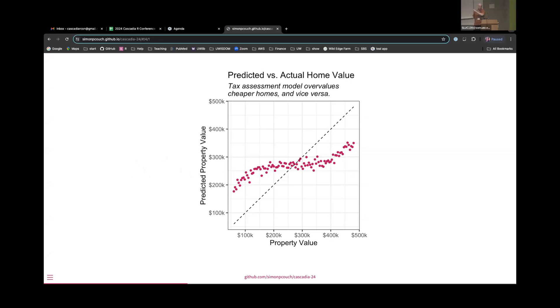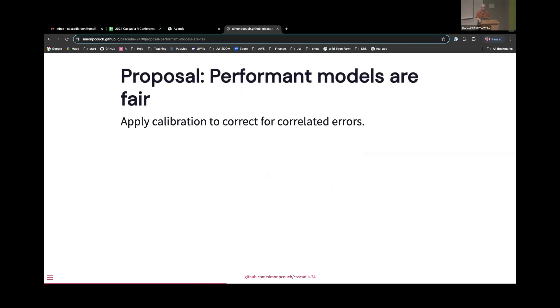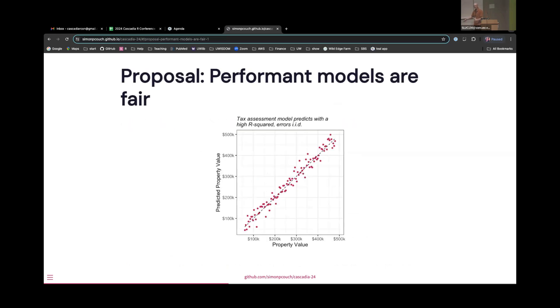So again, this is a bad model. It's a bad model in kind of a nice way where all the errors are correlated with each other. And so we have statistical techniques to correct for this. So one kind of argument that a lot of people have in what makes a fair model is that a fair model should at least be performant by our usual metrics, right? So earlier in this session, we mentioned R squared and RMSE. So let's see if we can get this model as performant as possible with respect to those metrics and see if that brings us closer to something that feels fair to us. So again, because these are correlated in a really nice way, we can apply a statistical technique called calibration. If we're lucky, we end up with a plot that looks something like this, where the errors are independently and identically distributed. And so maybe this is better.